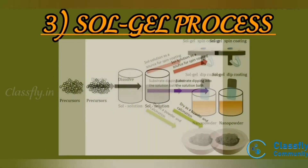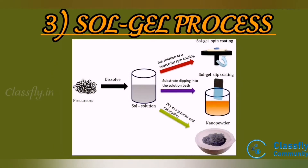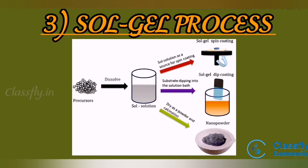Third one is the sol-gel process. The sol-gel technique is an important bottom-up approach for synthesis of nanomaterials. Sol and gel are types of colloids. A sol is a solid particle dispersed in a medium, and a gel is a continuous network of particles with pores filled with a liquid.